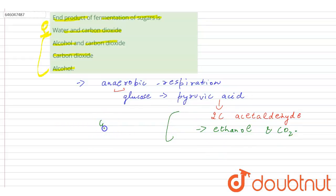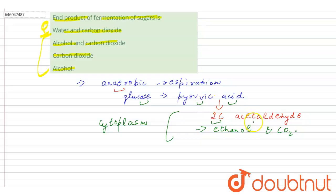All these processes take place inside the cytoplasm. So fermentation is a type of anaerobic respiration in which glucose is broken down into pyruvic acid, which then converts into acetaldehyde, and finally into ethanol with the production of carbon dioxide.